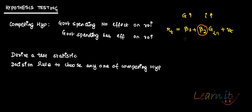You are interested in the coefficient beta 2. If beta 2 equals zero, this means that government spending has no effect on the rate of interest. If beta 2 is not equal to zero, then government spending does have an effect on the rate of interest.